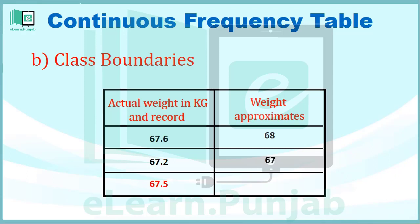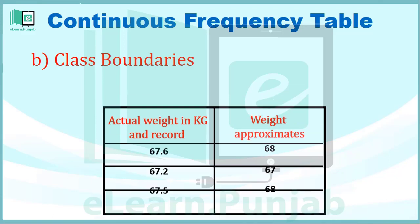इसी तरह Next Value 67.5 है। यहाँ पर Point के बाद वाली Value 5 के बराबर है, तो इस सूरत में भी यह 68 के करीब है। तो हमारे पास Approximate Value 68 आई।